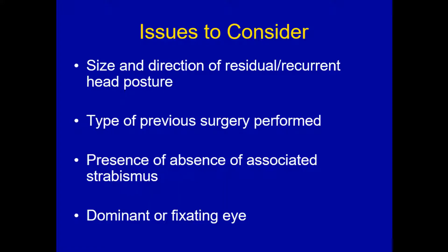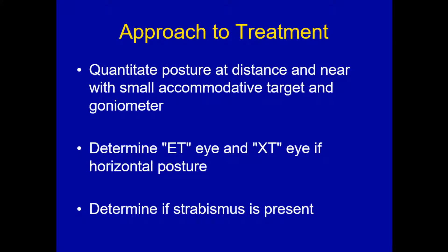The issues to consider are: the size and direction of residual or recurrent head posture — you want to measure that with a goniometer, not estimate. You'll almost always estimate a larger number than when you actually measure it; what looks like a 35 or 45-degree face turn often measures 20 or 25. The type of previous surgery performed is important — where are the muscles now? Sometimes you have to explore patients to find that out. You can't trust op notes. The presence or absence of associated strabismus is important, and the dominant or fixing eye — almost always the adducting eye.